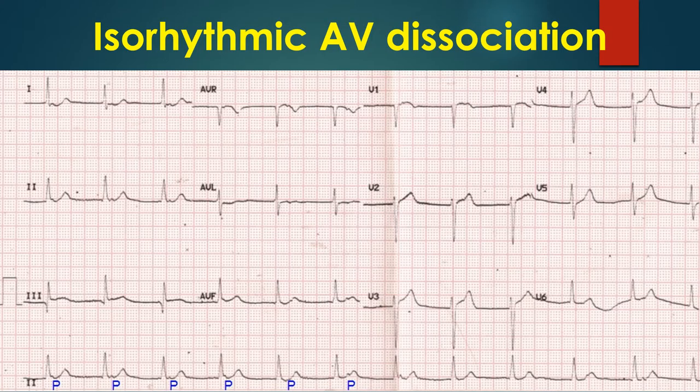In isoarrhythmic AV dissociation, inspiratory increase in sinus rate results in sinus rhythm dominating over AV dissociation. While in sinus rhythm, there is AV synchrony and hence higher pulse volume compared to AV dyssynchrony in expiration. The ECG shows typical fluctuation in the PQRS relationship with nearly identical atrial and ventricular rates.